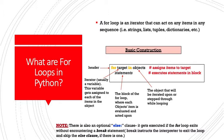This variable gets assigned to each of the items in the object. The object is that thing that we will iterate upon or step through while we're looping. The indented block portion here, statements, this is the block of the for loop where each object's item is evaluated and acted upon. Now note, there is also an optional else clause for for loops. It gets executed if the for loop exits without encountering a break statement. Break instructs the interpreter to exit the loop and skip the else clause if there is one.